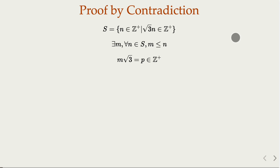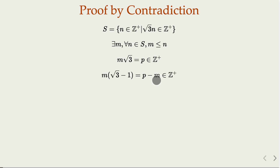Now we try to find a contradiction. We consider the quantity m times (square root of 3 minus 1). We use the fact that square root of 3 is strictly between 1 and 2. So this is a positive quantity. The whole expression equals square root of 3 times m minus m, which is an integer minus an integer. By closure of integer arithmetic, this is also a positive integer.